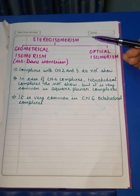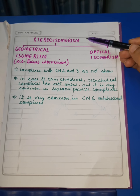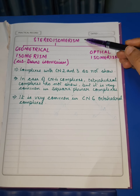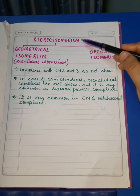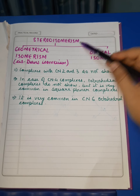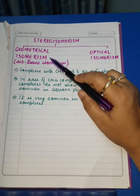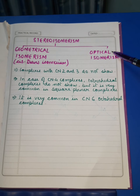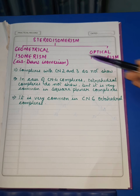Dear students, we are going to study about stereo isomerism in coordination compounds. Stereo isomerism in coordination compounds is of two types: one is geometrical isomerism and the other one is optical isomerism.